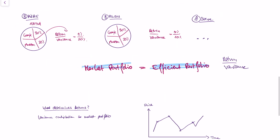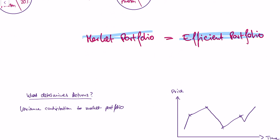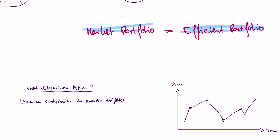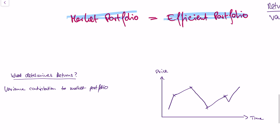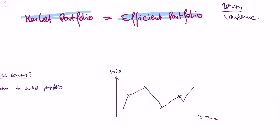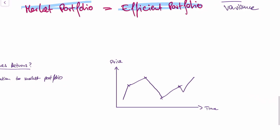The next step of the CAPM is to ask: we've understood that the market portfolio is a very special portfolio — can we actually use it to understand the return of a single asset, like a Tesla stock? The idea is that everybody holds the market portfolio, and this is a plot on the market portfolio.